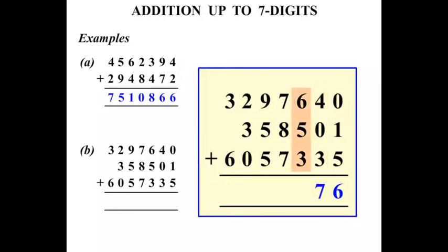6 plus 5 is 11 plus 3 is 14. So to write 14 we write the 4 down and carry the 1. 1 and 7 is 8 plus another 8 is 16. 1 plus 7 plus 7 is 23. So to write 23 put the 3 down and carry the 2.